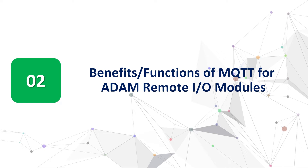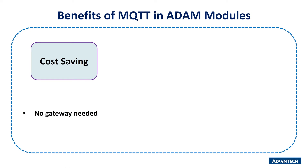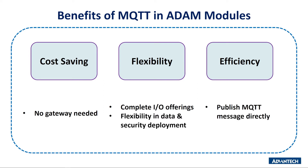Secondly, let's talk about benefits and functions of MQTT for ADAM Remote I/O modules. There are three main functions and benefits. The first benefit is cost-saving, due to no need for a gateway. The second benefit is flexibility, because ADAM 6000 and 6200 series Remote I/O offers complete I/O, and MQTT enables them to have flexibility in data and security deployment. The last benefit is efficiency, since MQTT data is forwarded to the broker directly and users can customize conditions to trigger event notifications with simple configuration.